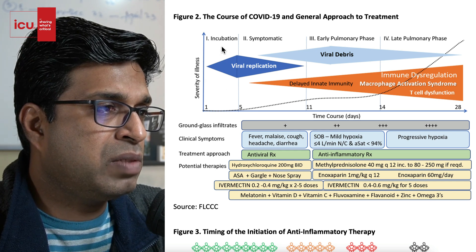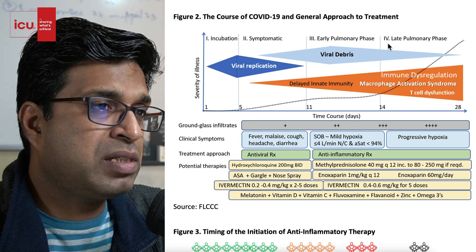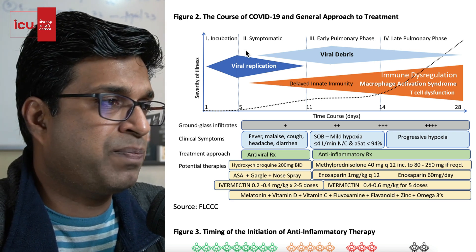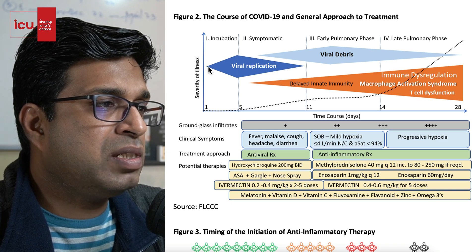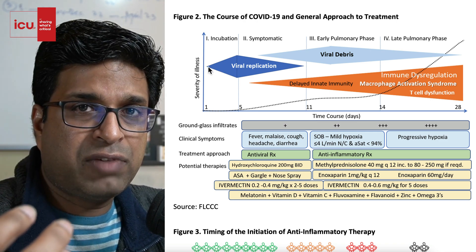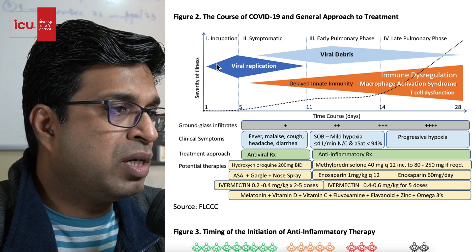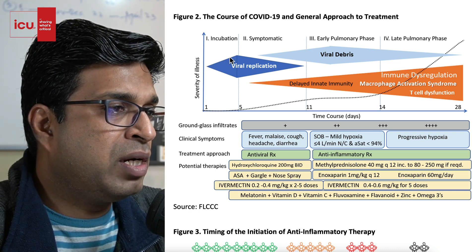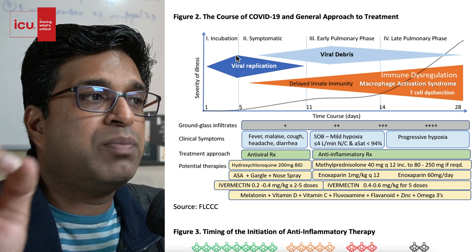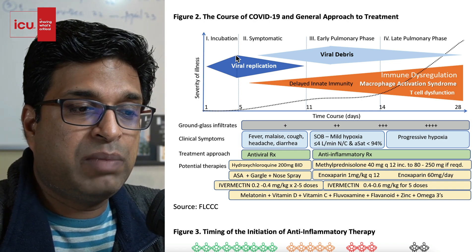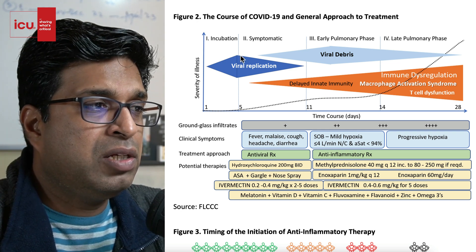COVID-19 disease can be divided into four stages: first is the incubation period, second is the symptomatic period, third is the early pulmonary phase, and fourth is the late pulmonary phase. In the incubation period, a person gets infected with the COVID-19 virus, the virus starts multiplying rapidly in the body, and reaches a peak point where it starts mounting symptoms.